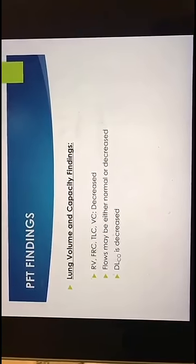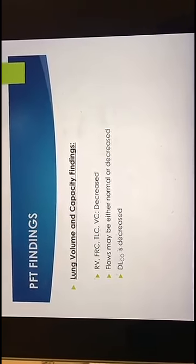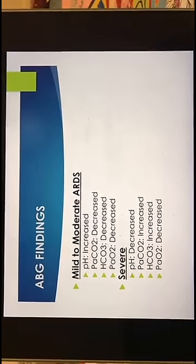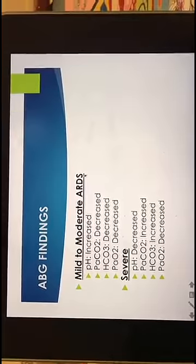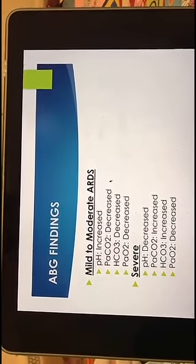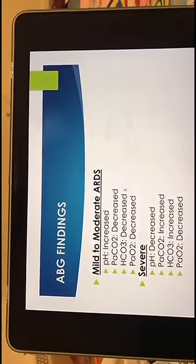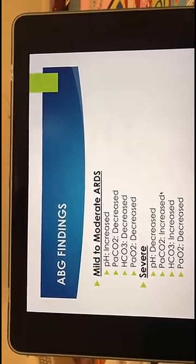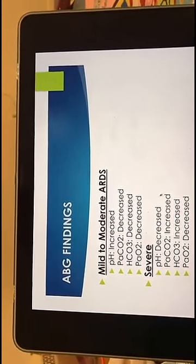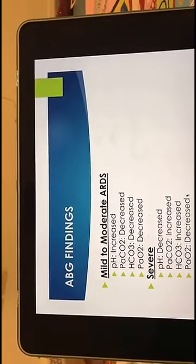Lung volume and capacity findings are within the range of restrictive lung diseases. ABG findings in mild to moderate cases: PCO2 decreased since the patient is tachypneic, PO2 will decrease, pH increase. In severe cases, PCO2 increased, pH decreased, and PO2 will be severely decreased.